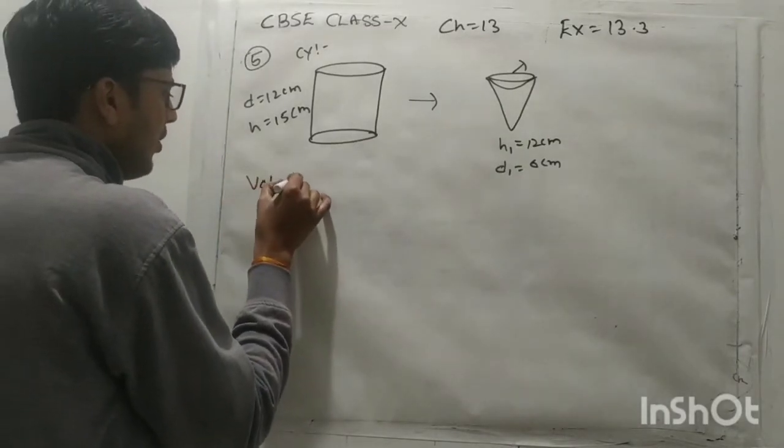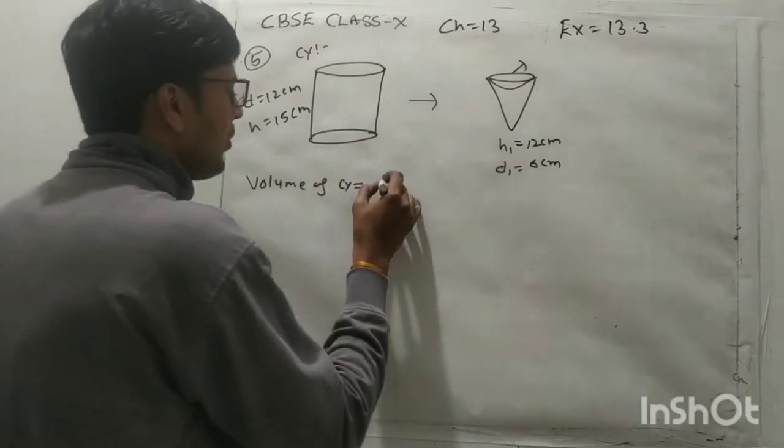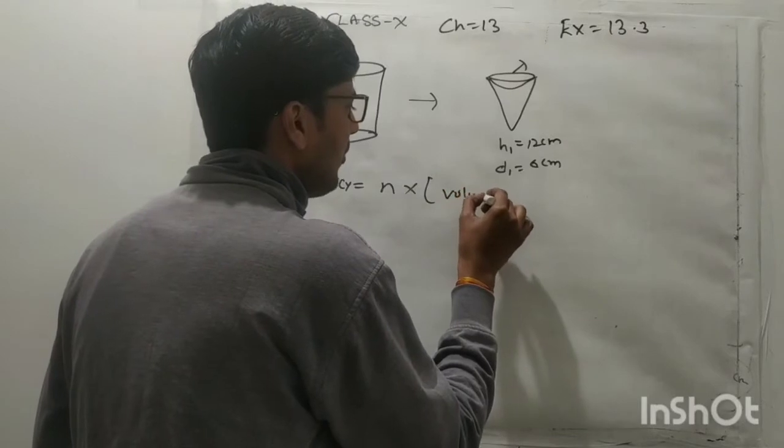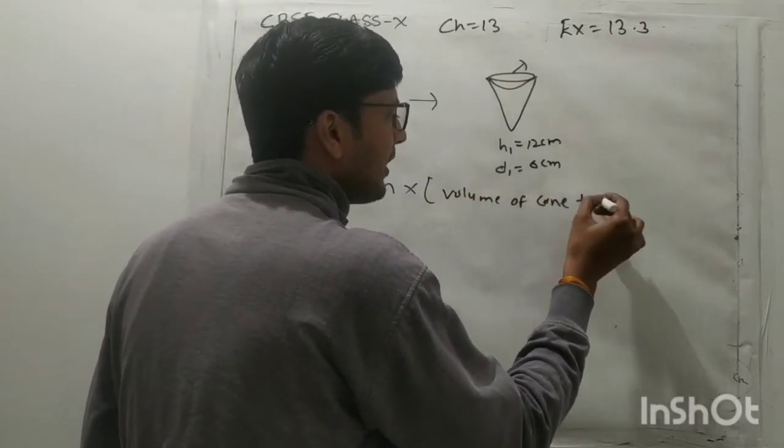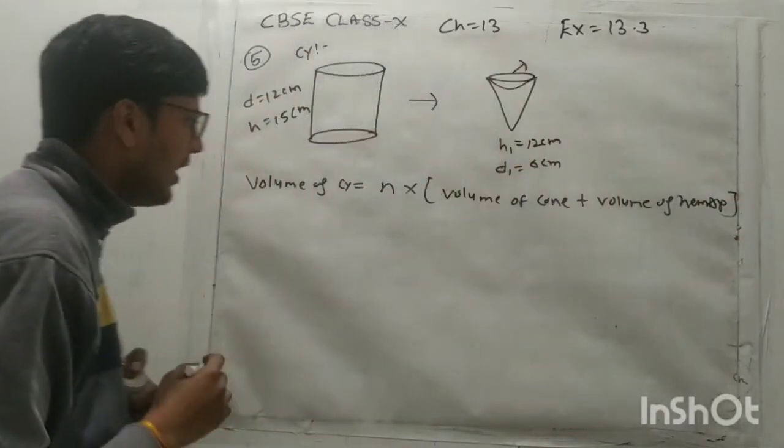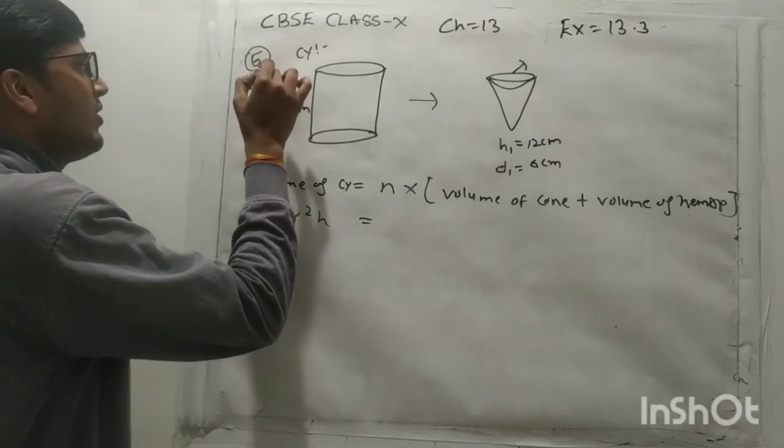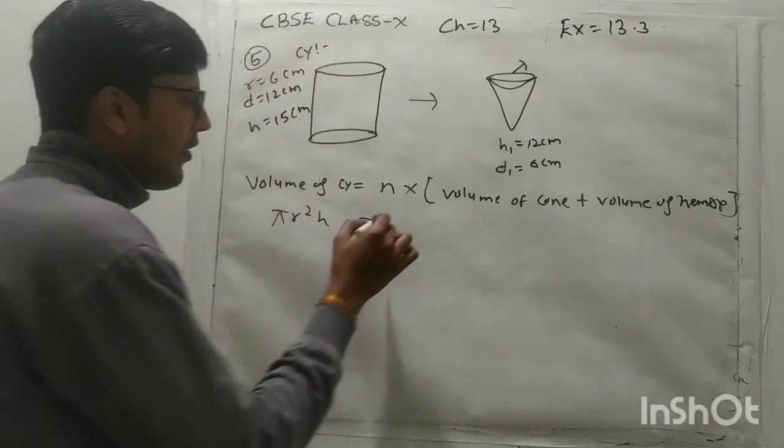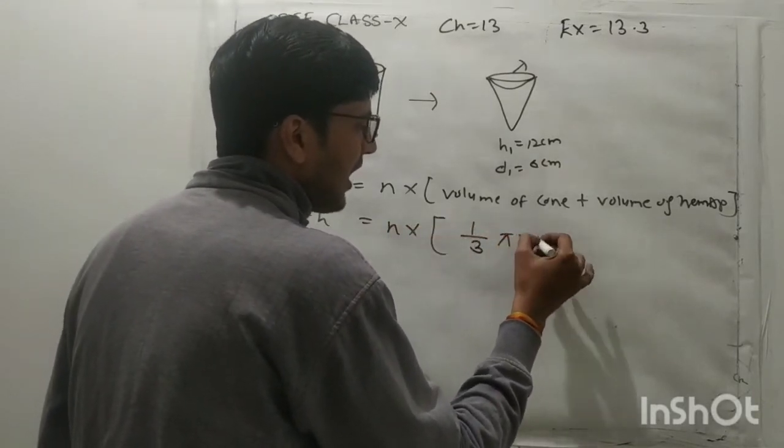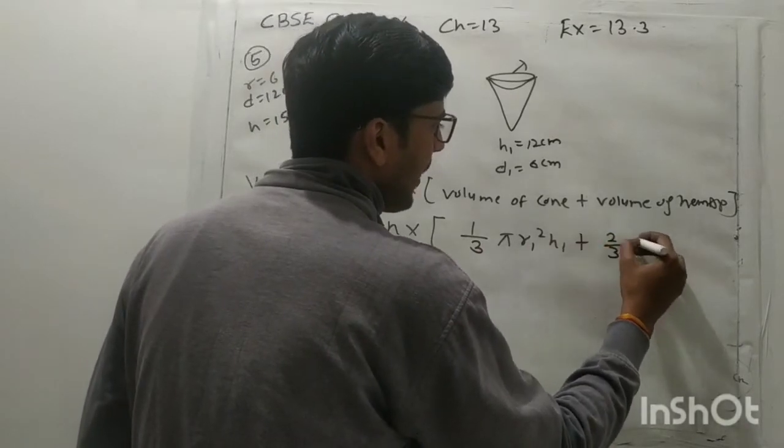So it means simple, volume of cylindrical or cylinder, cylindrical shape of ice cream equals, suppose I let n is the number of cones. And what, simple volume of cone or cone ke uper ka, volume of hemispherical shape. So simple volume of cylinder is what, pi r square h. Here diameter is 12 so radius is 6 cm.